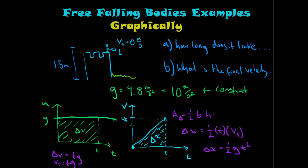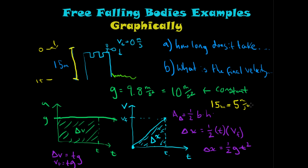We know the displacement is 15 meters. We set the origin at the ground as zero and the top at 15, so everything downward is positive and we work with all positives. Wherever you set your origin will affect whether you attach a negative sign to the acceleration.